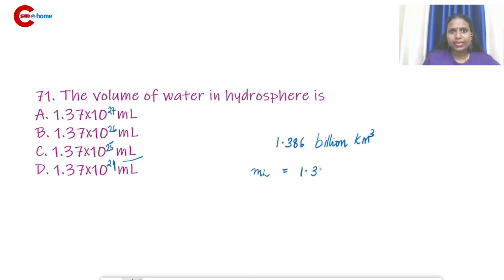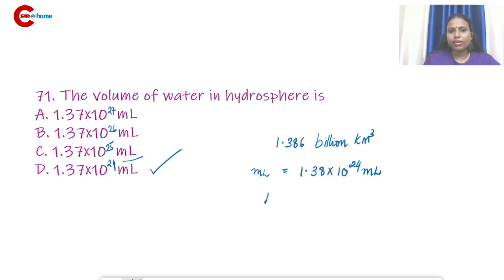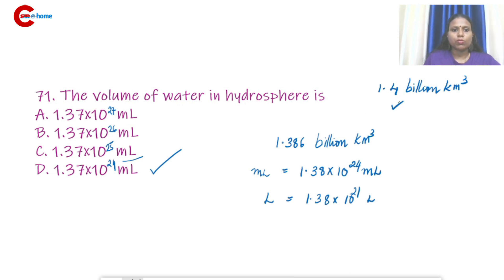If expressed in milliliters, the answer is 1.38 × 10²⁴. If expressed in liters, the answer is 1.38 × 10²¹. In some textbooks they have written it as 1.4 billion kilometers — that is also correct. So 1.37, 1.38, and 1.4 are all acceptable answers.